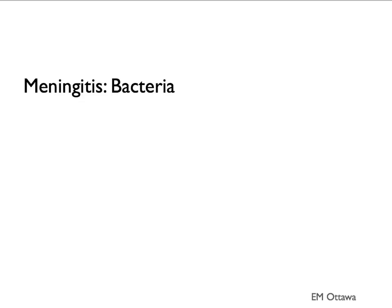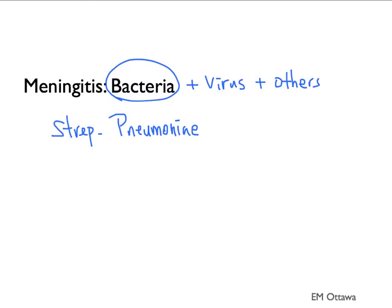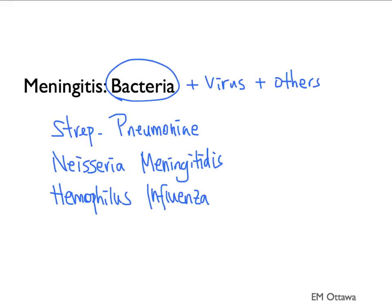In terms of meningitis pathophysiology, it can be caused by bacteria, viral, and other causes. The main one we need to concern ourselves with is bacterial meningitis. Organisms enter the meninges through the bloodstream from other parts of the body. The main bacteria include Strep pneumoniae, Neisseria meningitidis, and Haemophilus influenzae. All these bacteria are part of the normal flora in the upper respiratory tract.